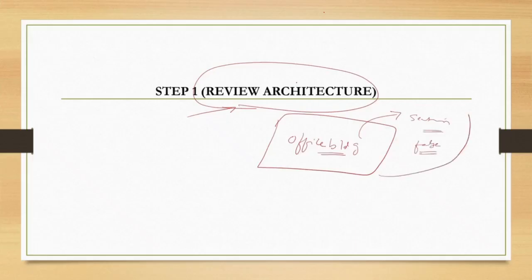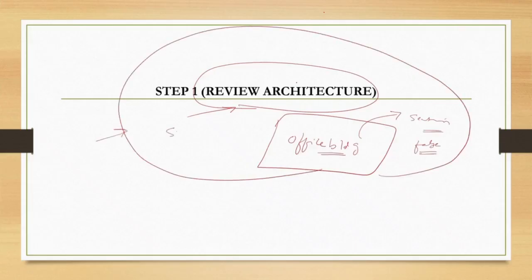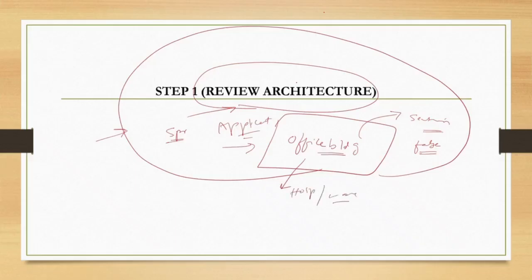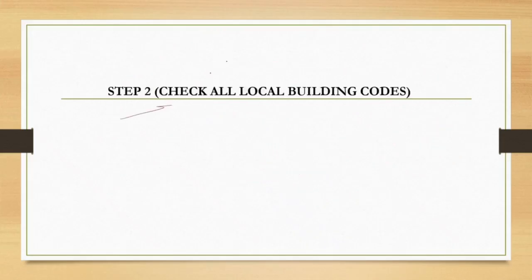We need to thoroughly go through the architecture layouts, section details, and also false ceiling plans of this particular building. We need to get a clear idea about the architecture — without that we cannot properly develop the sprinkler design. While reviewing the architecture, we need to understand the application of the building: is it an office building, a hospital, or a warehouse?